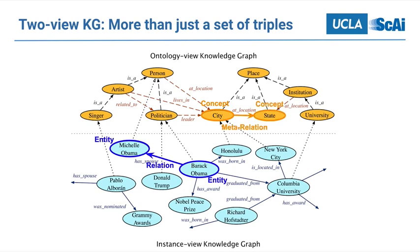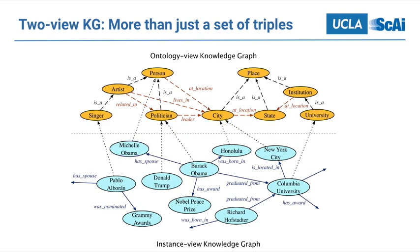These two views are usually bridged by type links. For example, instance-view entity Barack Obama is connected to the concept politician in the ontology view. In other words, one entity is related to other entities in the same view through relational facts, and is also influenced by concepts in the other view. So taking Mr. Obama as an example, the embeddings of Obama will not only be affected by Michelle, Columbia University, Honolulu, or Nobel Peace Prize, but also constrained by the concept politician.